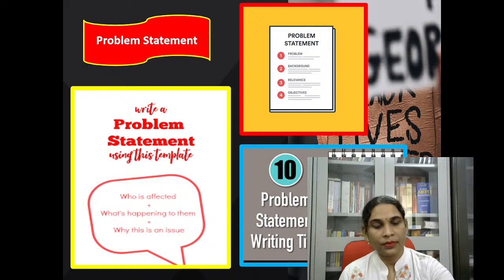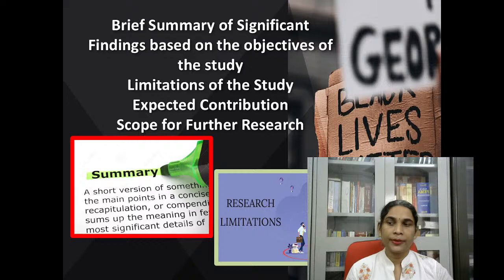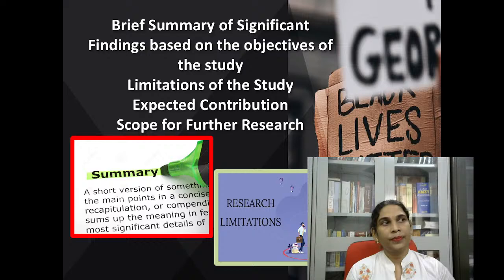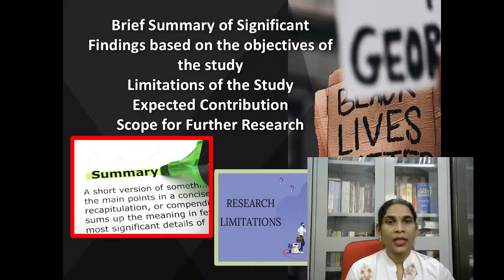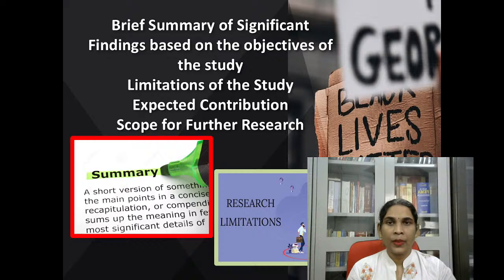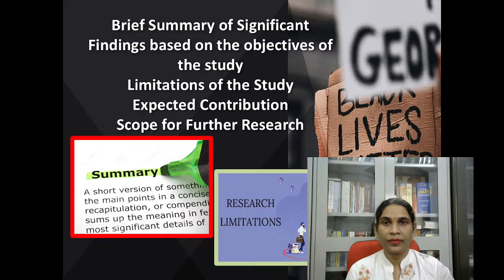Brief summary of significance: those who are doing data collection and analysis of government reports, pending cases, or decided cases must follow these steps for findings based on the objective of the study. For example, if Right to Information Act decided cases are less compared to the next year, your finding would be like 9 minus 3 equals 6. So 6 is your finding. Analysis is important when you are getting findings based on the objective of the study.